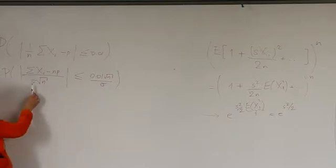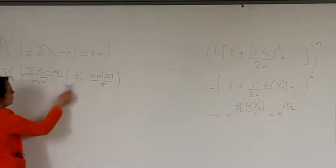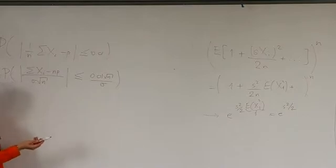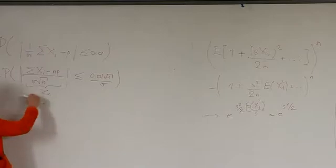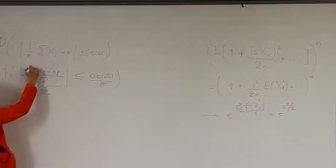So what have I done? I divided both sides of the inequality by sigma, which is a positive quantity. I multiplied both sides of the inequality by square root of n, which is again a positive quantity and doesn't change the direction of the inequality. What do I gain from this? This is my z sub n. Do you recognize this as z sub n?